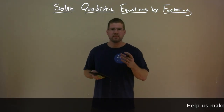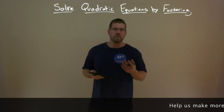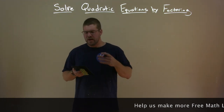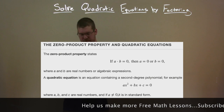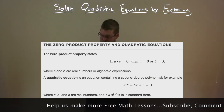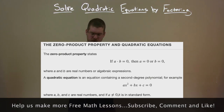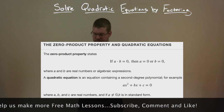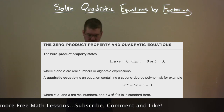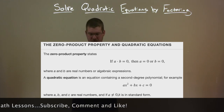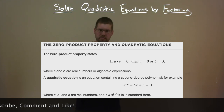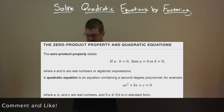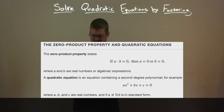The first thing we're going to start with is a definition about the zero product property. The zero product property states: if a times b equals zero, then a equals zero or b equals zero, where a and b are real numbers or algebraic expressions.